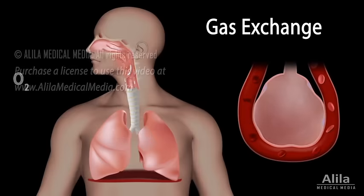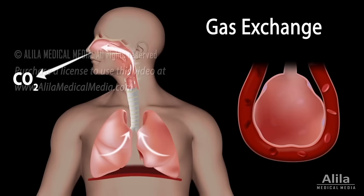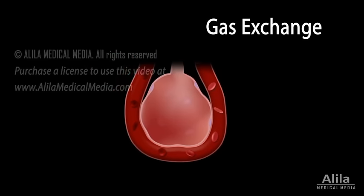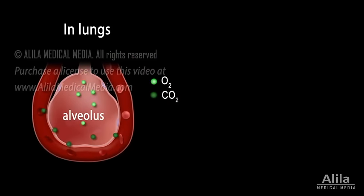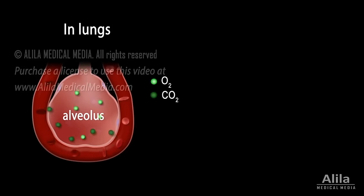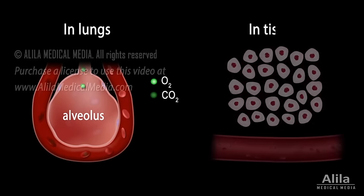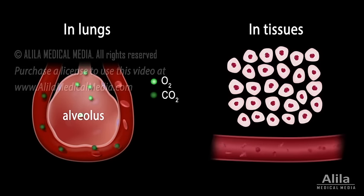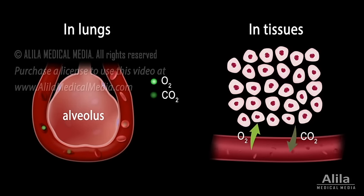Gas exchange is the major purpose of the respiratory system. Inhaled air unloads oxygen and picks up carbon dioxide in the alveoli of the lungs, while the blood picks up oxygen and unloads carbon dioxide. The oxygenated blood then travels to the body's tissues, where the reverse process happens.